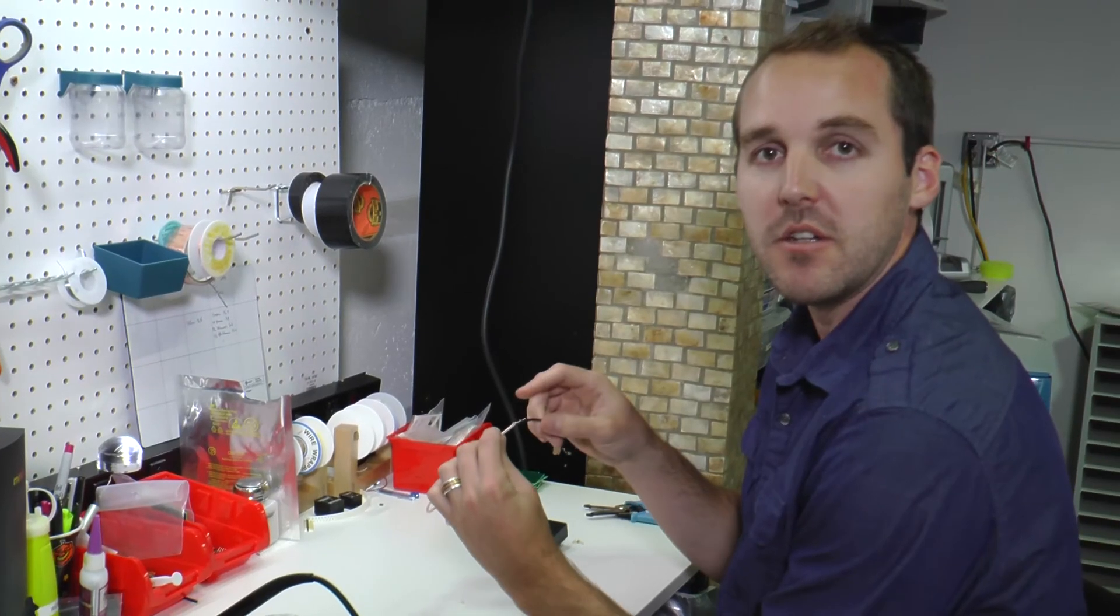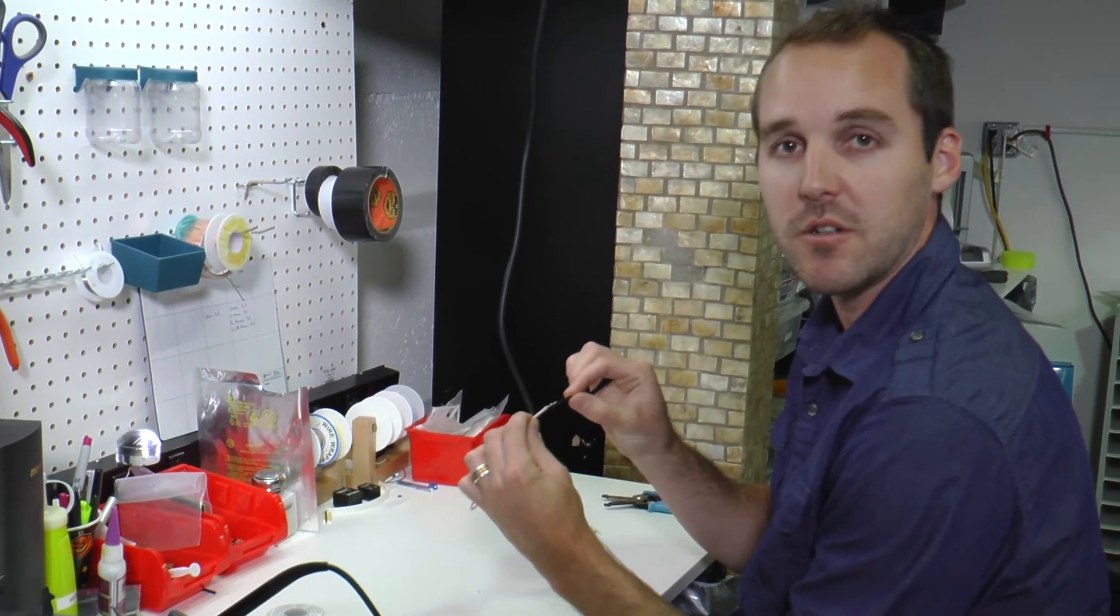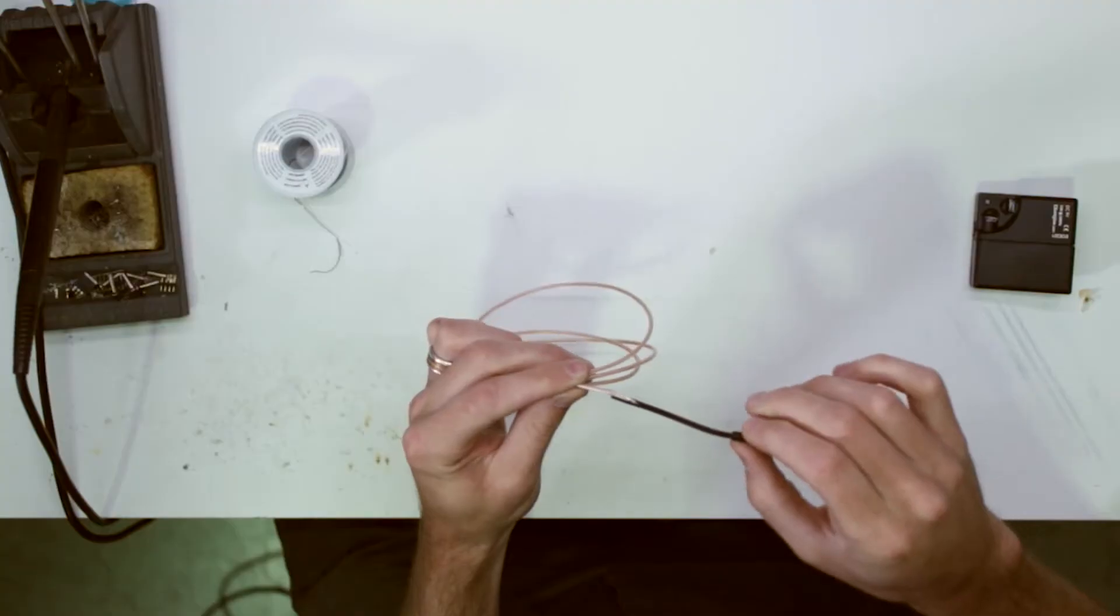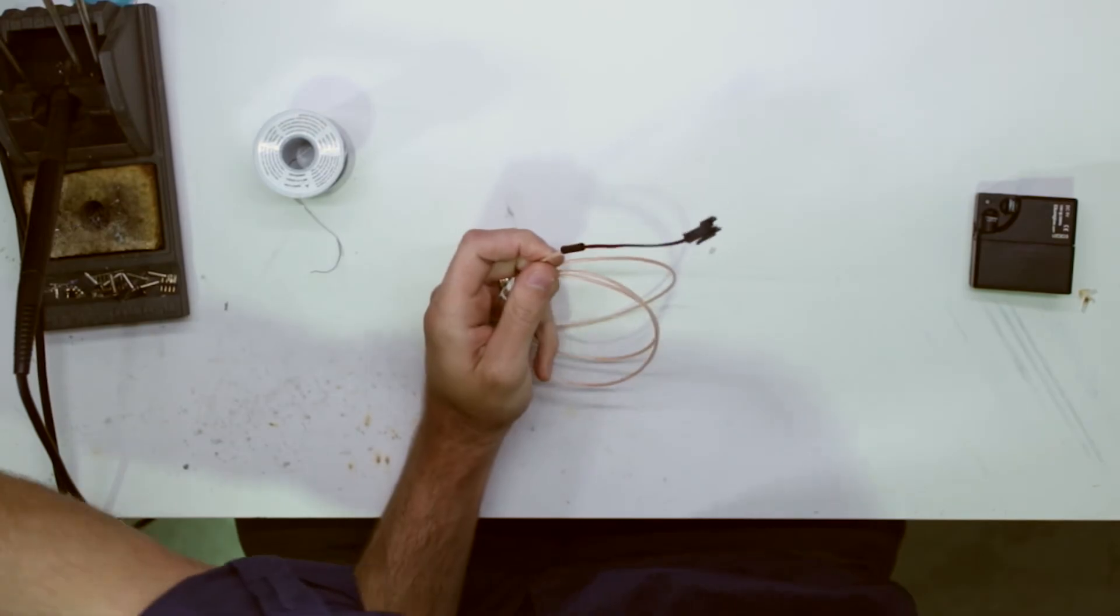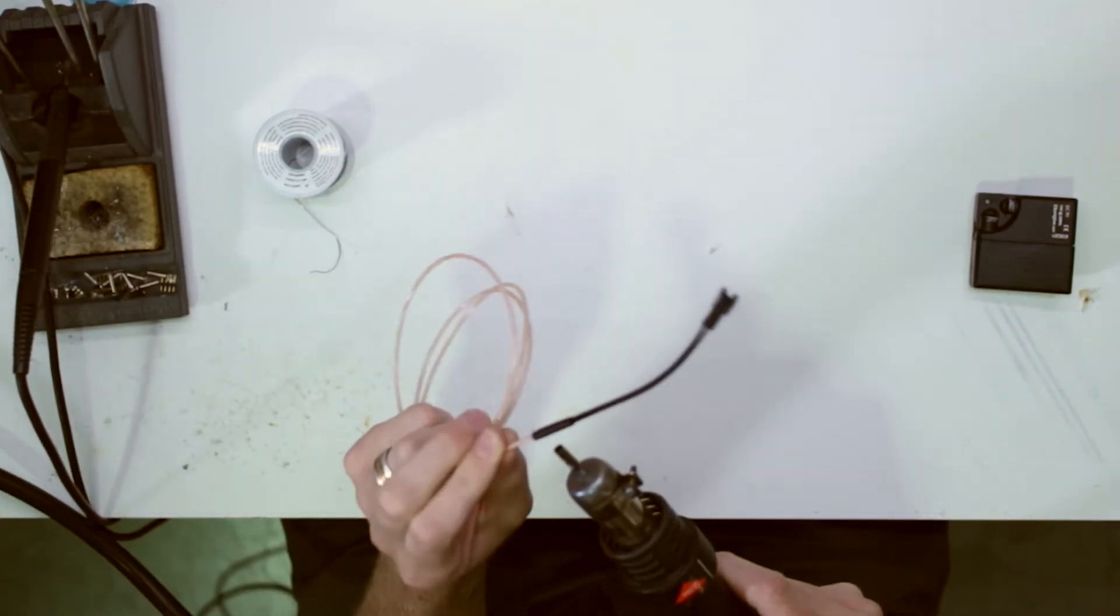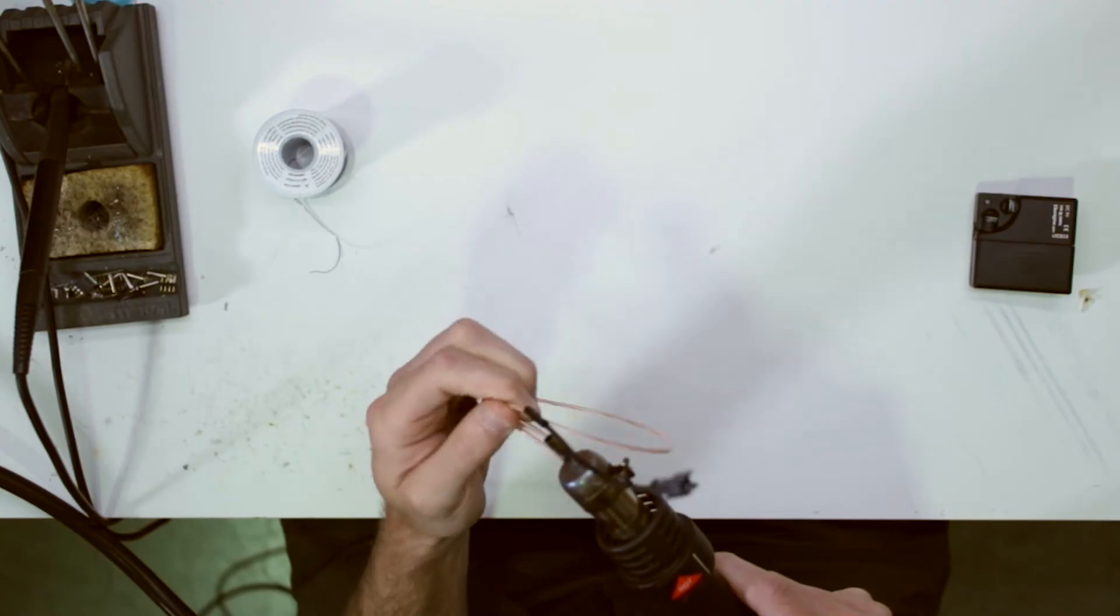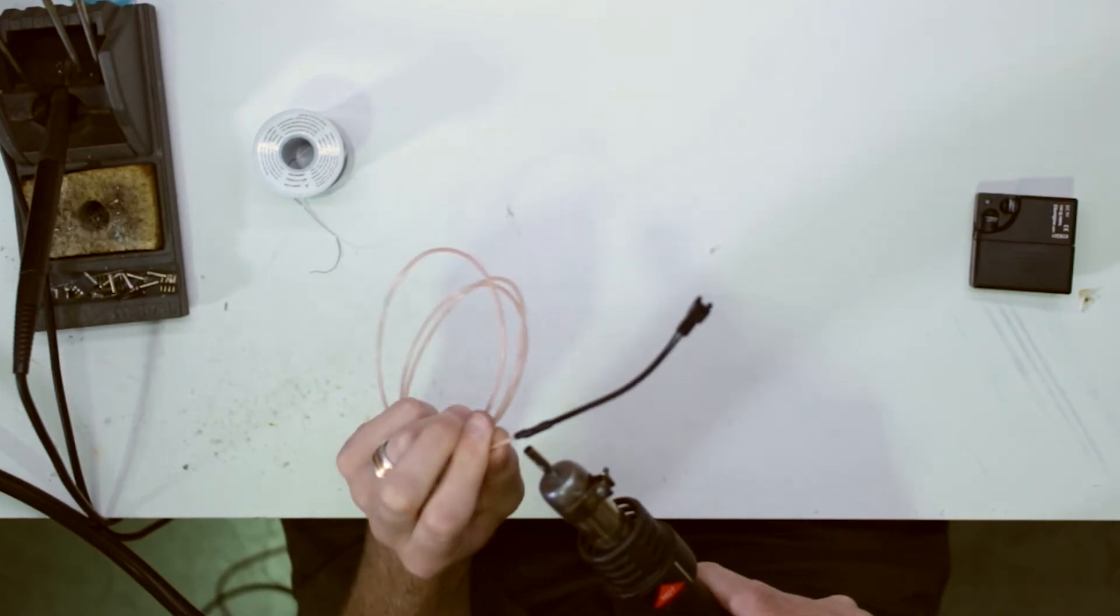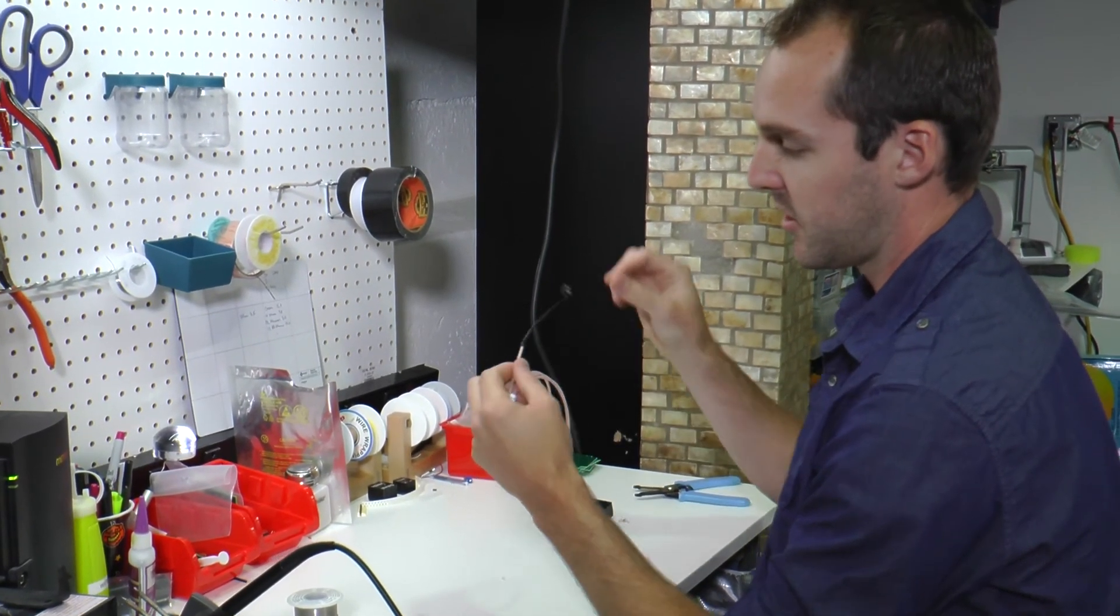So you want to make sure that you keep all the weight on the copper core wire. This will make sure that you have a strong long lasting connection. Next slide your heat shrink tubing over the top and heat it up with your heat gun. Once that heats up you have a real nice solid connection.